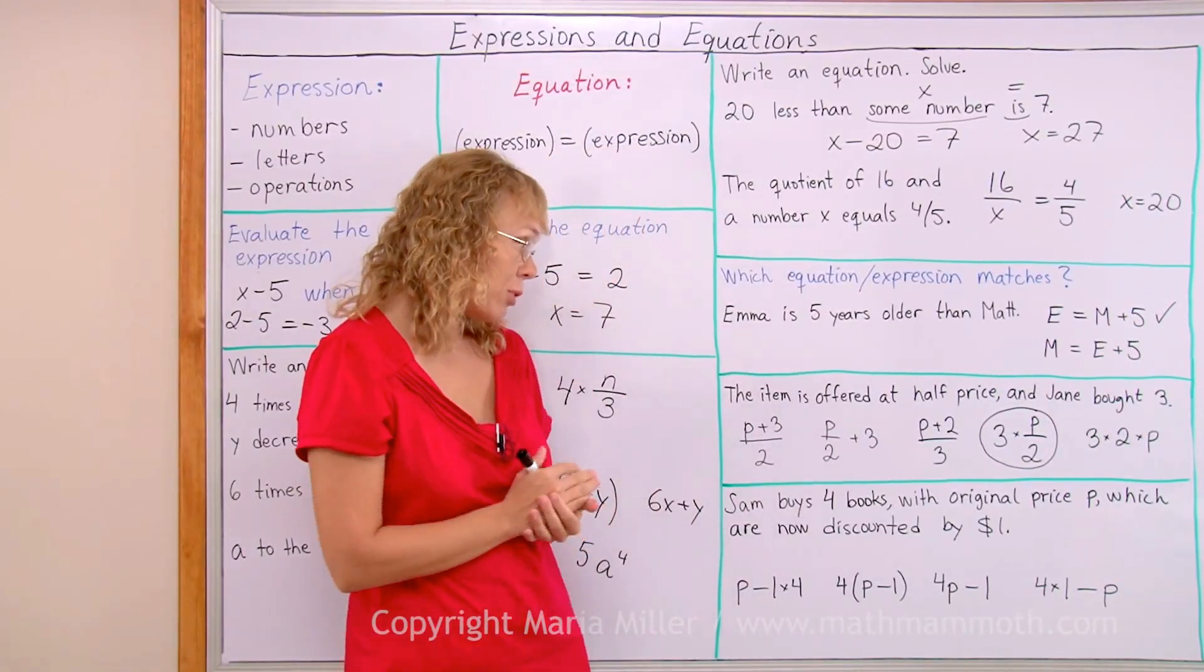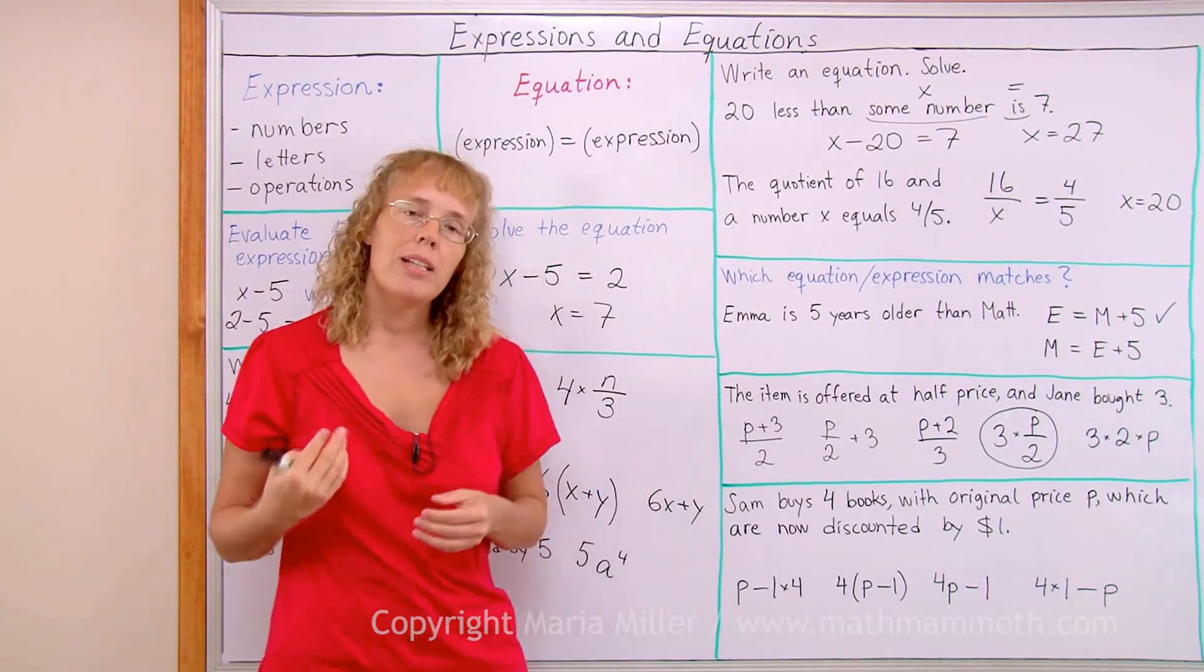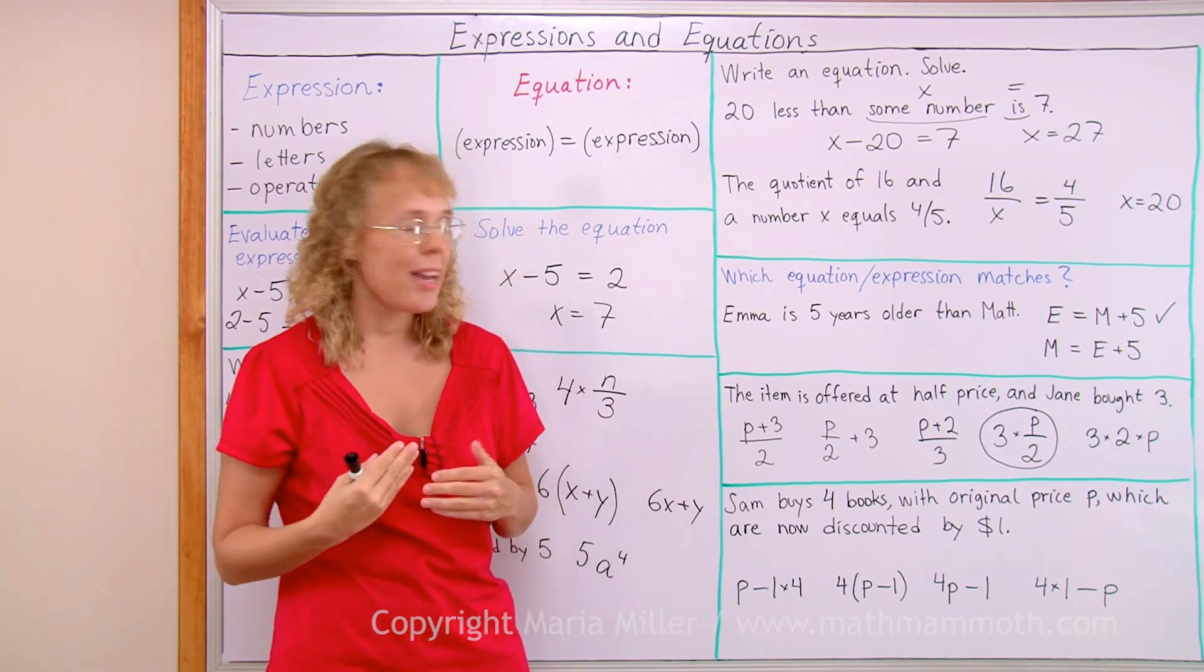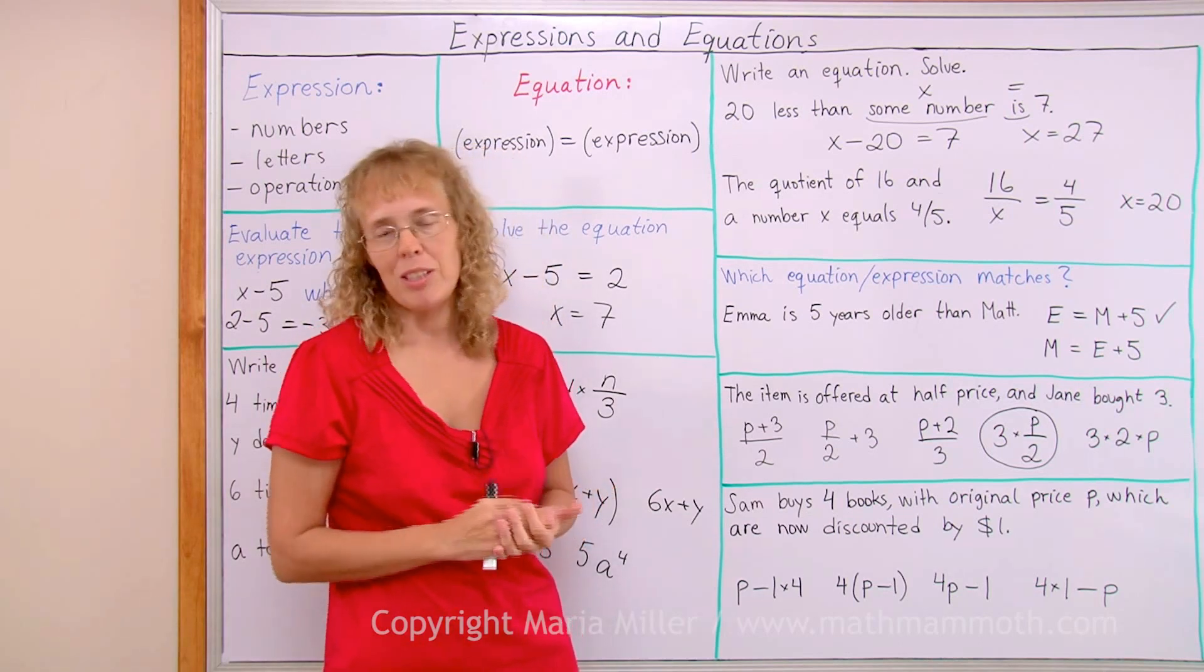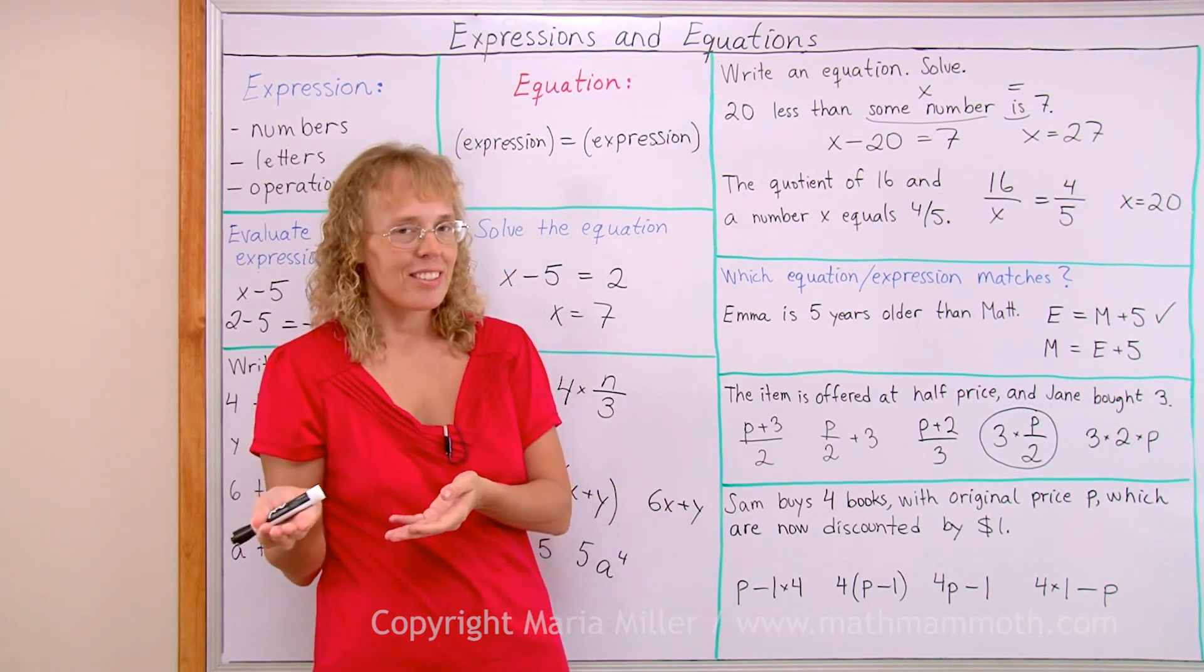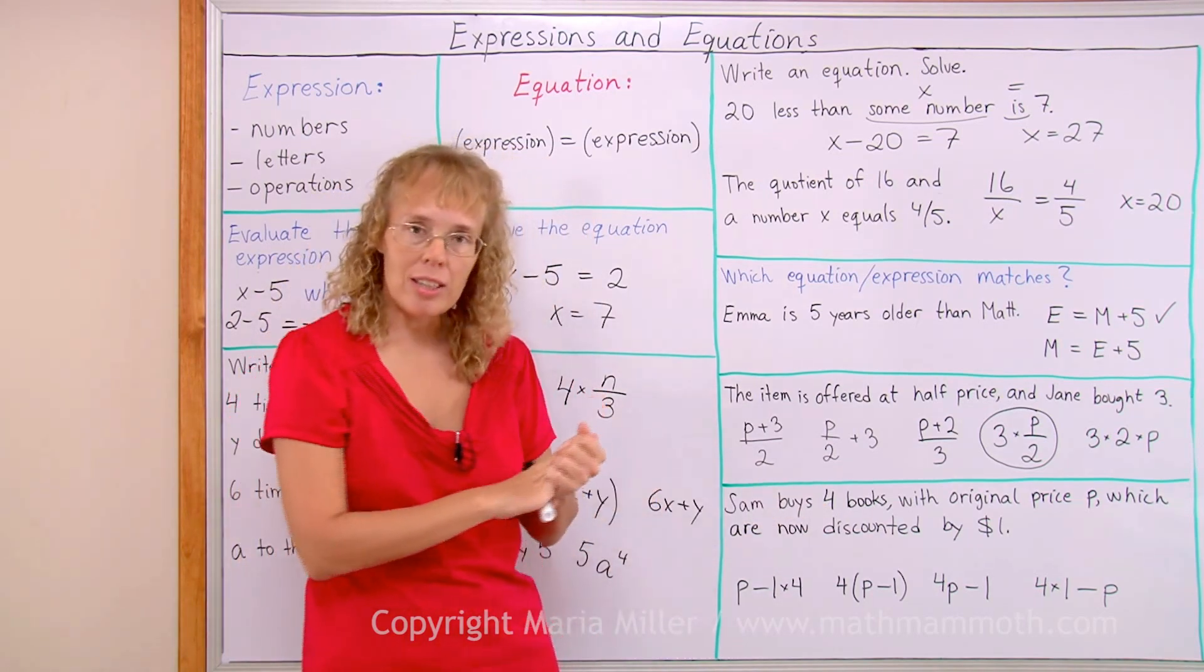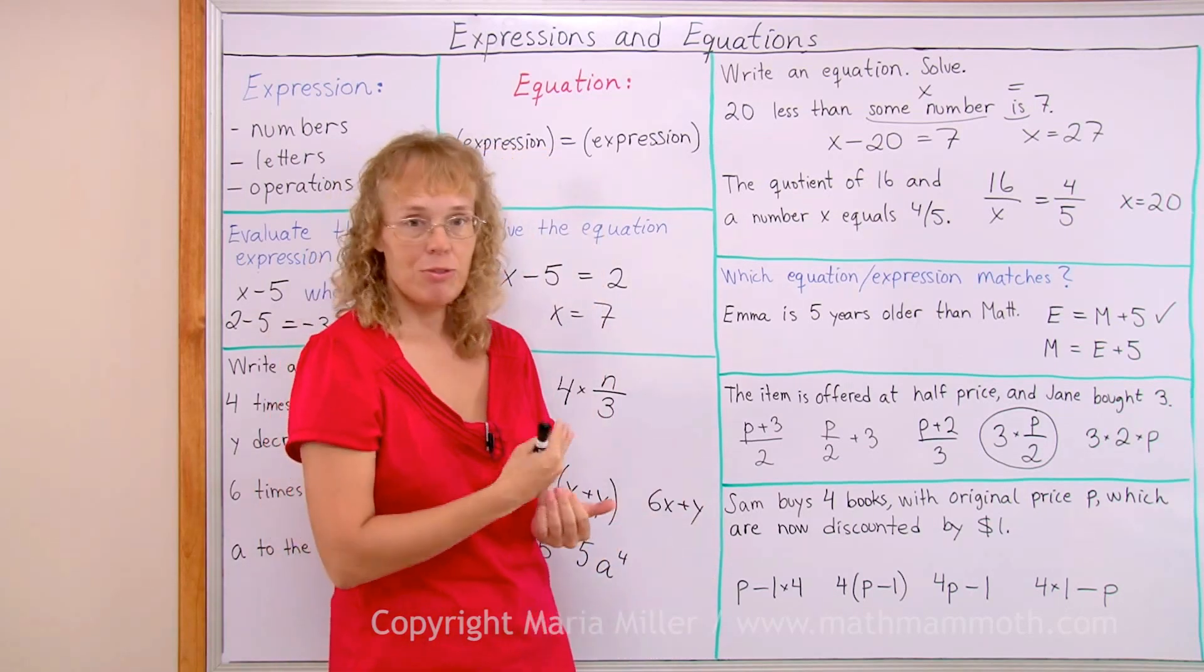Lastly, Sam buys four books with original price p, which are now discounted by one dollar. Again, think that what operation will you do first in this kind of situation to find how much Sam needs to pay? Okay, Sam buys four books and the books have a price and they're discounted by one dollar. So you first subtract from the price one dollar, right? Then once you find that price, then you multiply by four because he buys four books. So something by the subtraction p minus one and then that multiplied times four, okay?